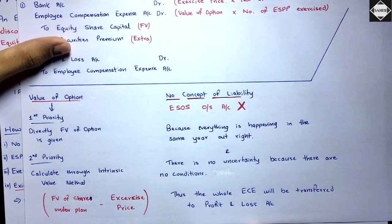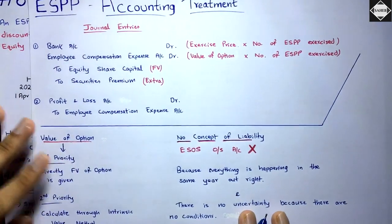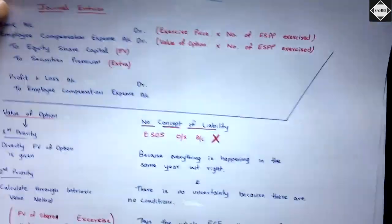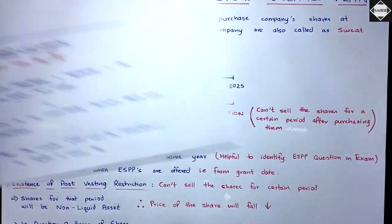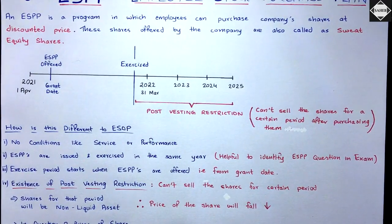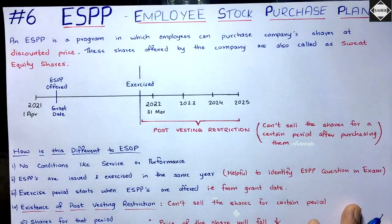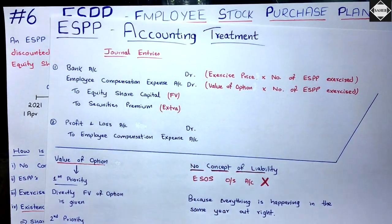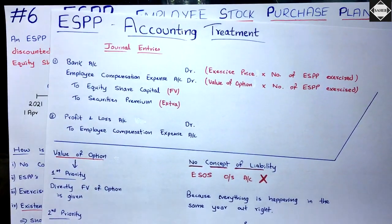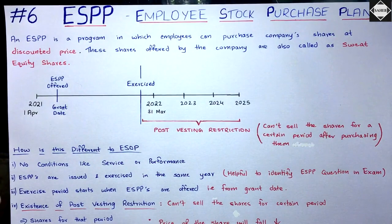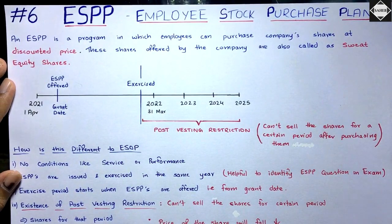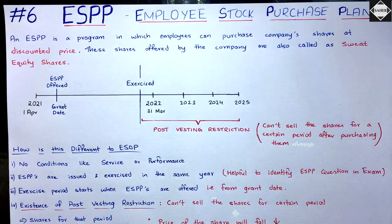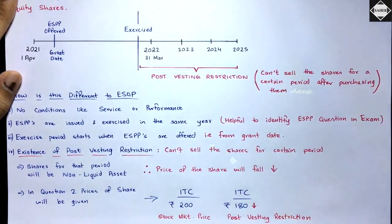From the next video, we will begin solving problems on ESPP — available for Silver Club members. I hope you are completely clear about this concept. Many students were confused about Illustrations 1 and 3 of the ICAI study material and why those entries differ from ESOP — it is because those problems are based on ESPP. See you in the next video where we will solve ESPP problems.